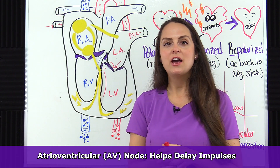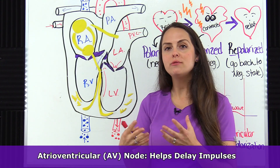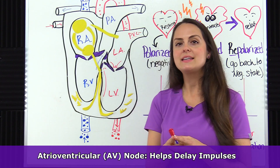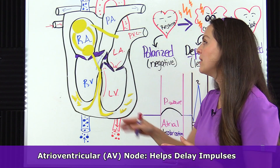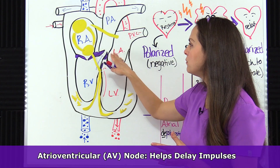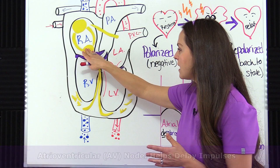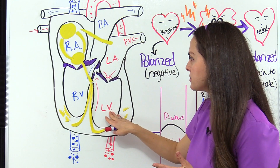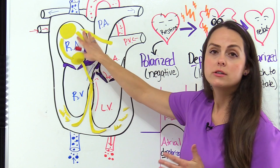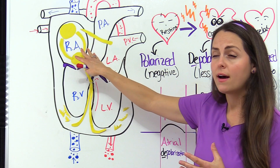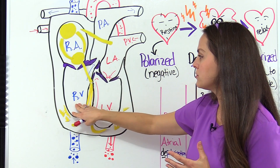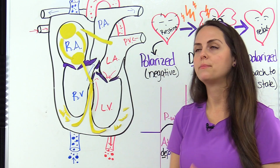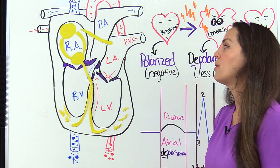The AV node helps delay or slow down impulses for just a little bit because it's allowing the atria to fully empty themselves and allow the blood to go into the ventricles. We don't want there to be leftover blood in the atria before the ventricles contract, and we don't want the atria and ventricles contracting together because we would have problems.